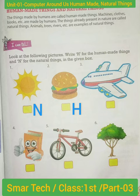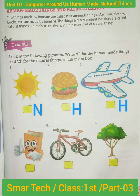Next, third one — aeroplane or plane. Human-made things or natural things? Tell me. Good. This is human-made things. Next, fourth one — textbook or notebook. Tell me, is this human-made things or natural things? Good. This is human-made things.